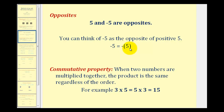I also want to mention the commutative property. When multiplying two numbers, the product is the same regardless of the order. Three times five, or five times three, is equal to fifteen.